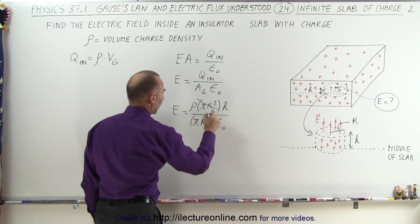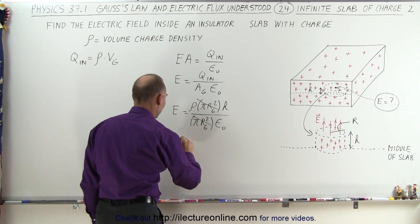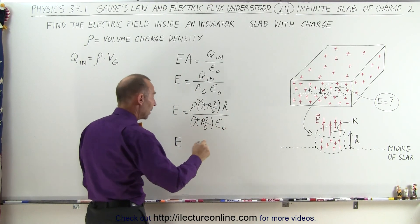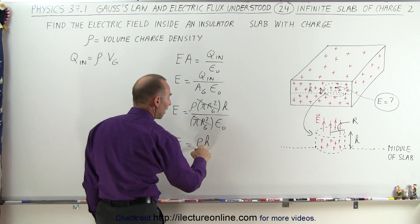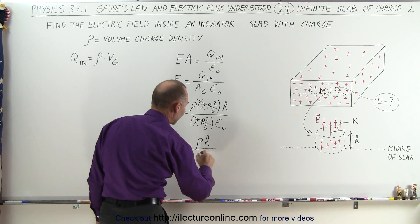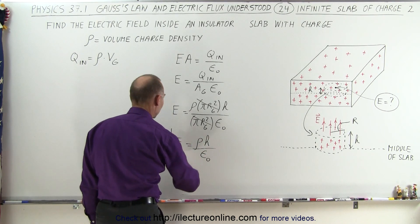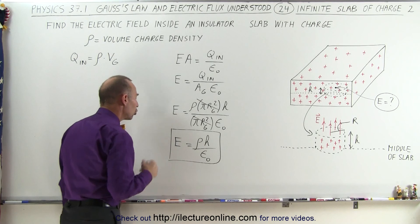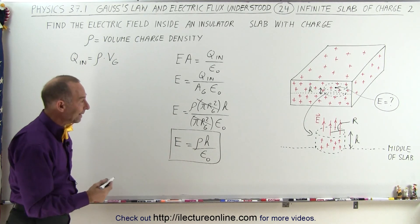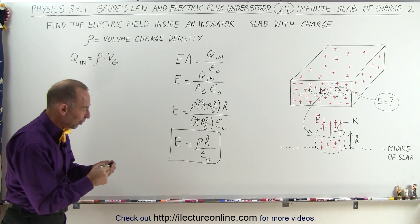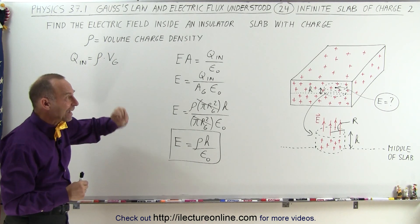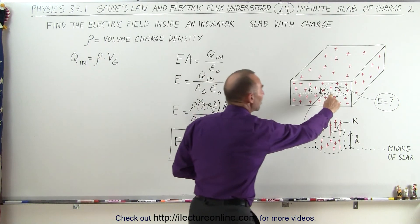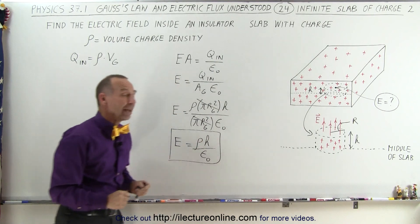Notice that pi R sub-G squared cancels out, and so the electric field inside the slab is going to be equal to the volume charge density times the distance away from the center of the slab divided by epsilon sub-naught. That will be the magnitude of the electric field inside the slab, some distance H above the center of the slab. And that's how that's done.